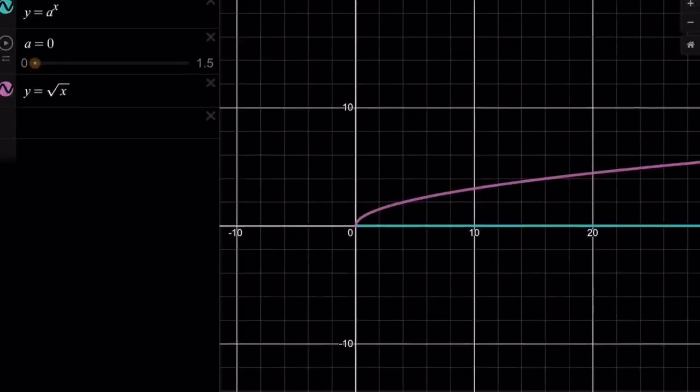So here's Desmos. What you can basically do is you can set up a ruler of certain values for a, and you can compare these two graphs, a to the power x and square root of x. For changing a values, obviously, we're going to get a different graph. The blue one every time is going to be different. The pink one is basically the square root function. So if a is equal to 0, you're going to get y equals 1, which is basically a horizontal line.